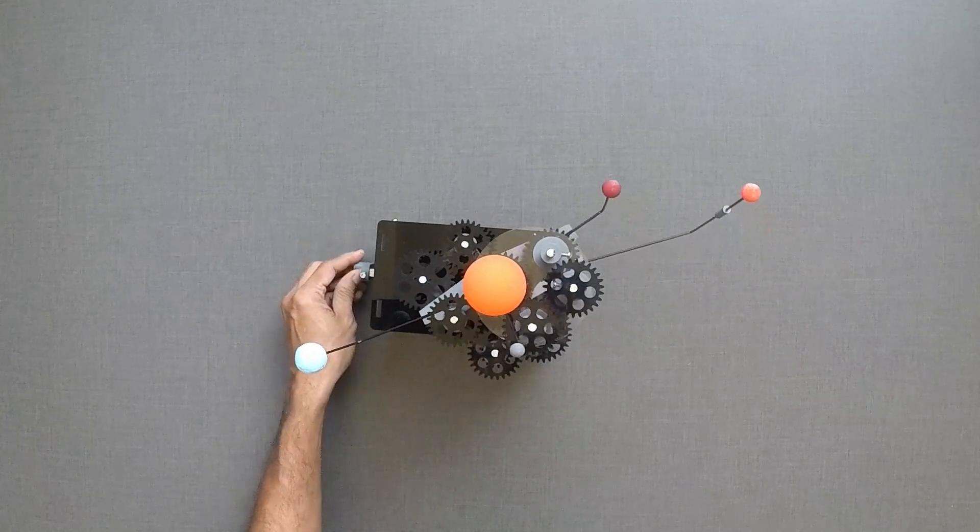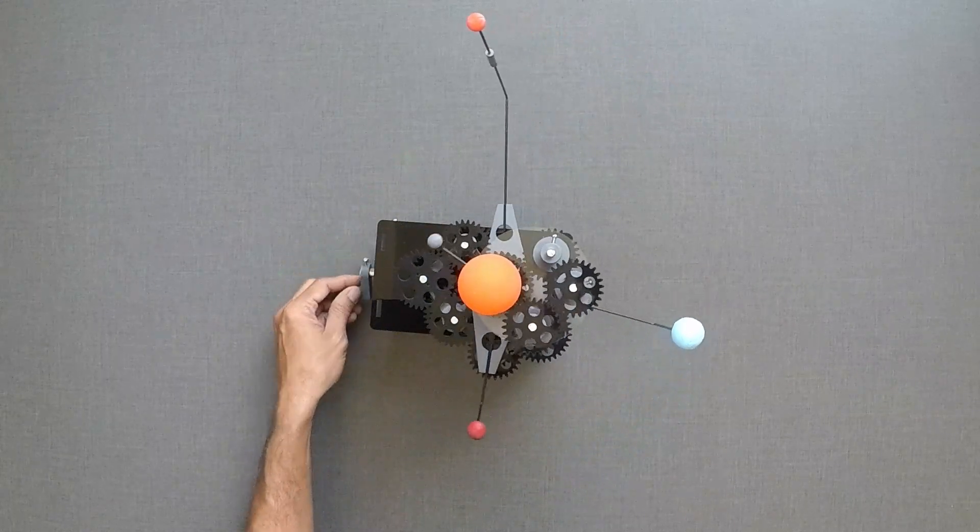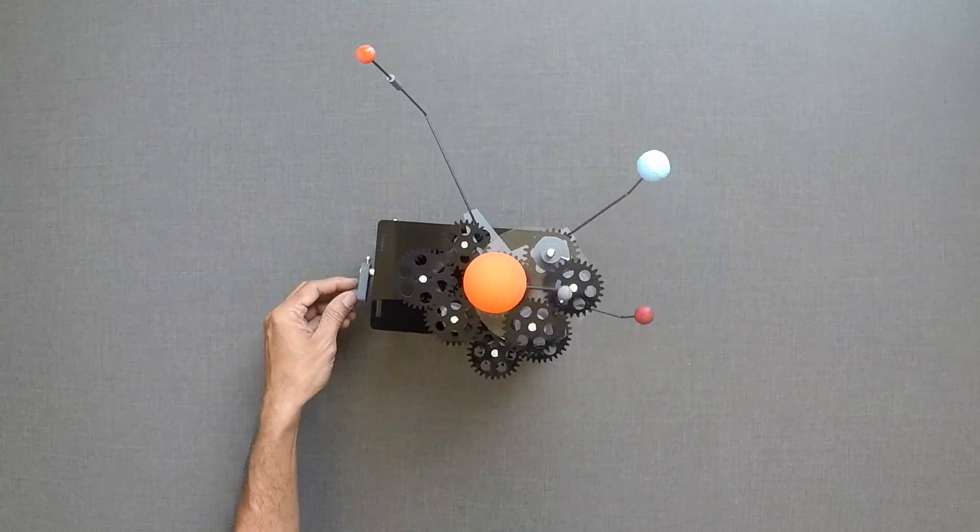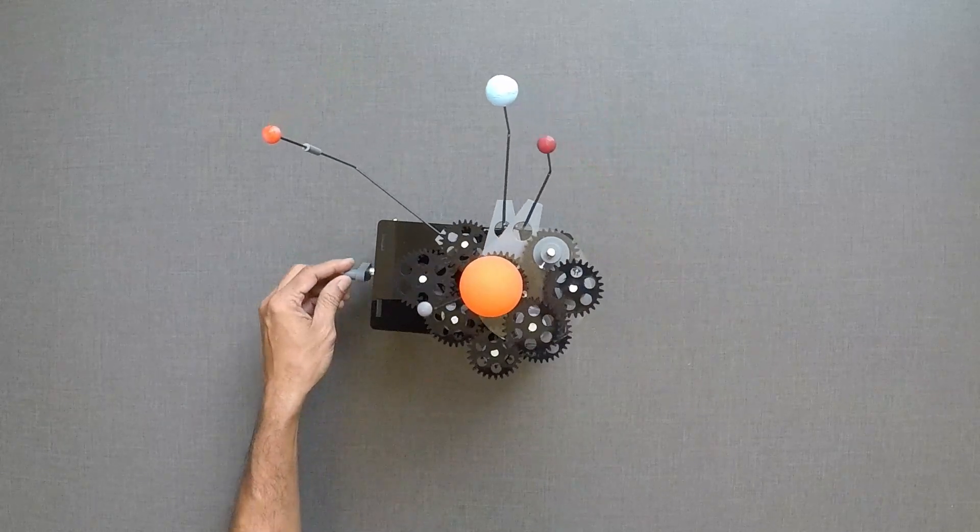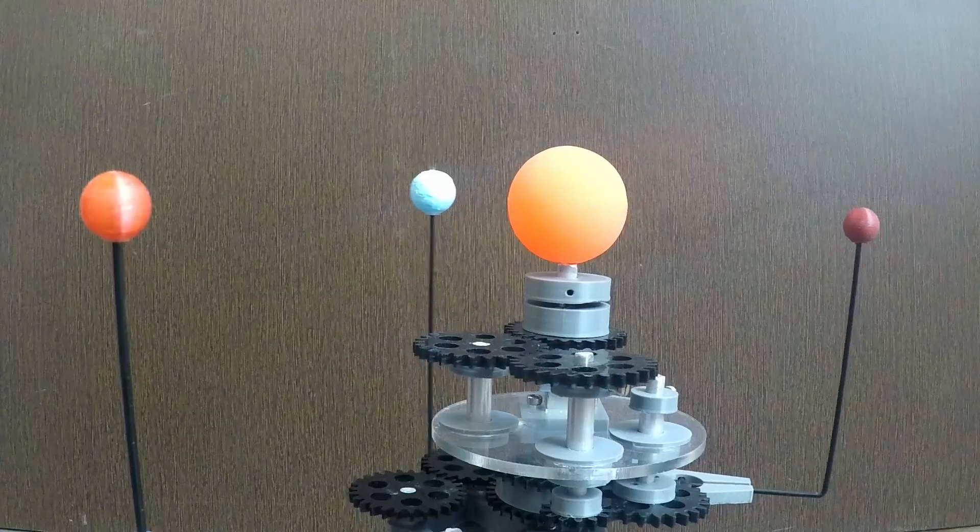As you can see, the closer the planet is to the Sun, the faster it moves. This is related to the Sun's gravitational pull on the planets. It is stronger for planets nearer to the Sun.